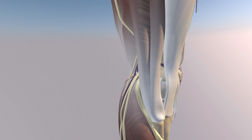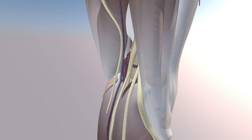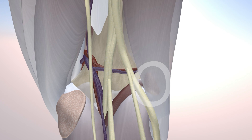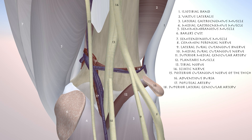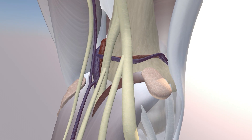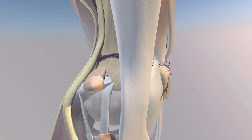Now we're going to go ahead and make the biceps femoris muscles and tendons translucent. You can appreciate this adventitious bursa underneath it, and this is what I believe this patient has — some sort of rubbing of the biceps femoris tendon and muscle over the lateral femoral condyle slash epicondyle, causing this adventitious bursa which you can appreciate here.